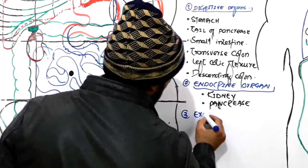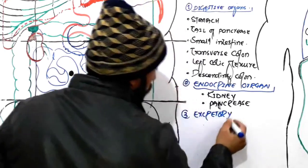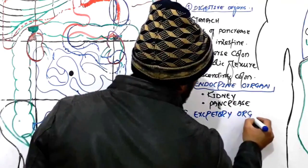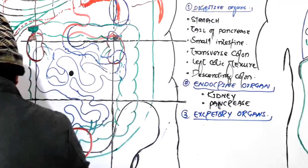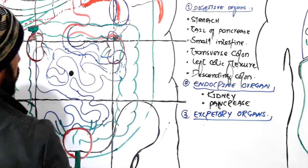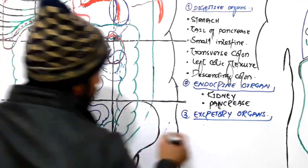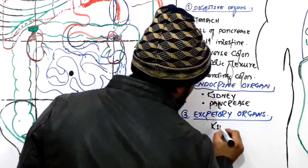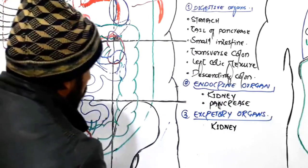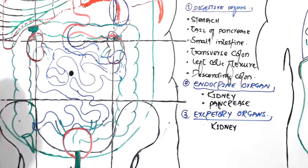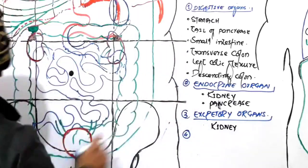As for excretory organs in the left hypochondriac region, the kidney is present here and plays a very important role in the excretion of different substances from our body.